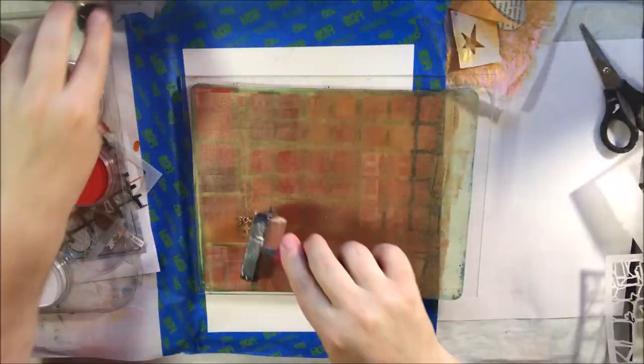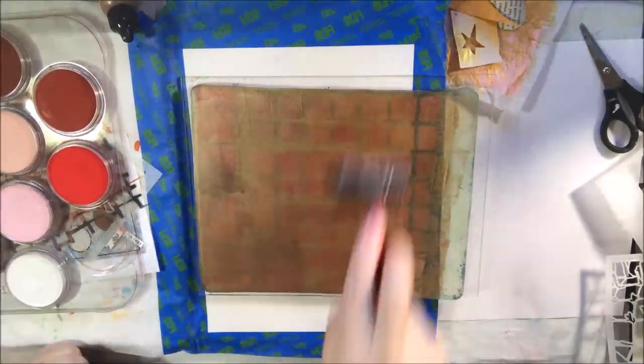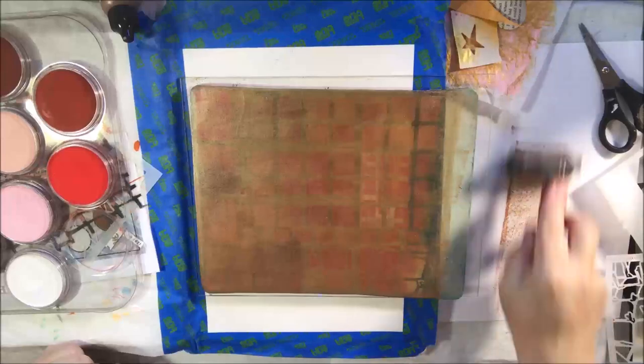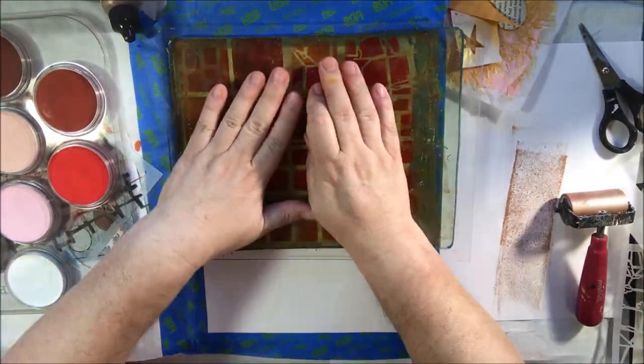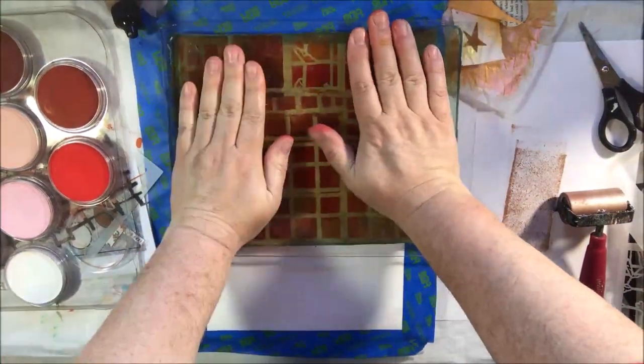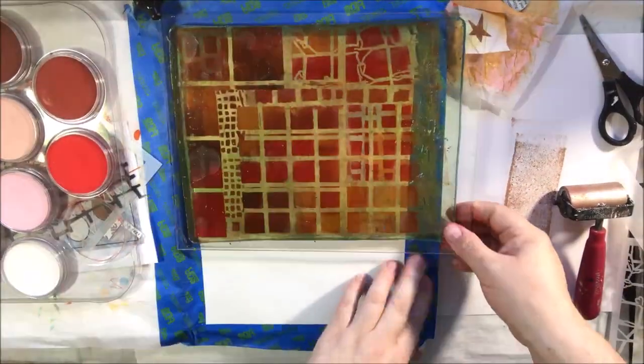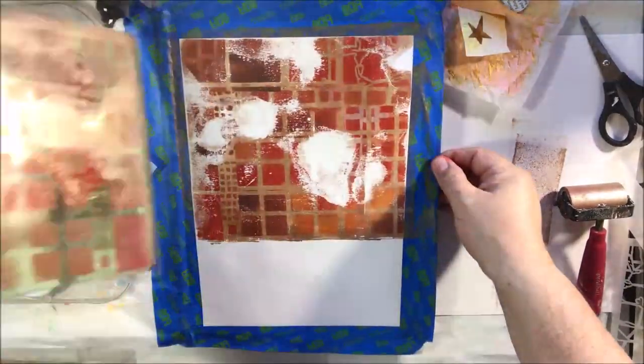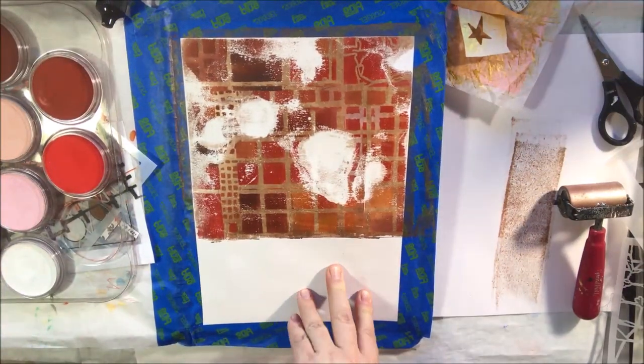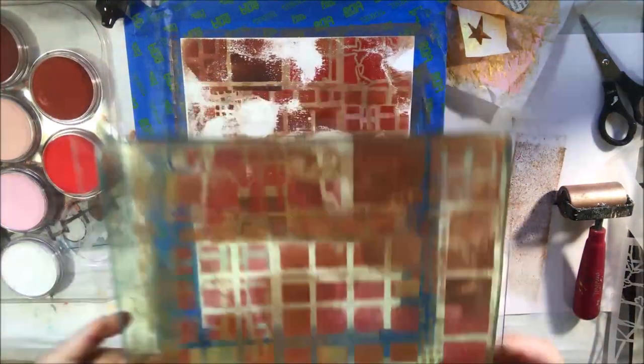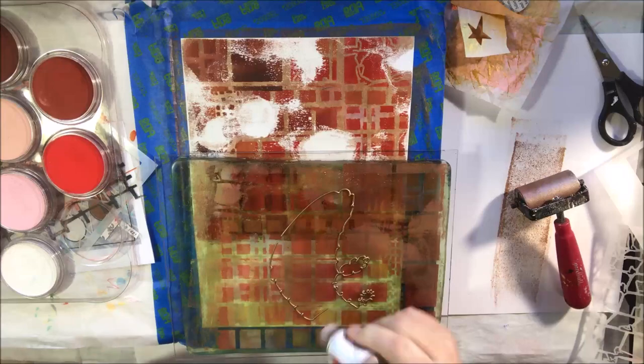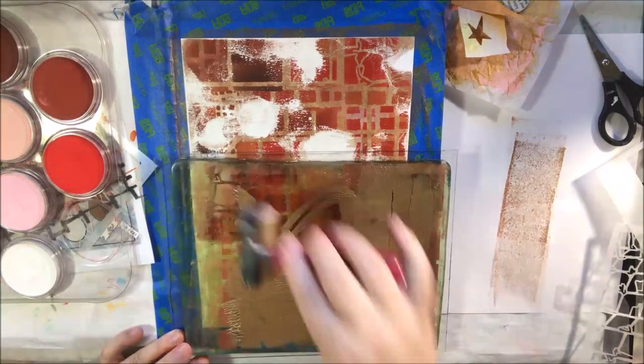I'm putting a very thin layer of bronze metallic paint. This is Ancient Colored Paint, a heavy body paint from Dina Wakley. I stood up and I'm trying to press as hard as I can. I'm using the plate like a stamp.